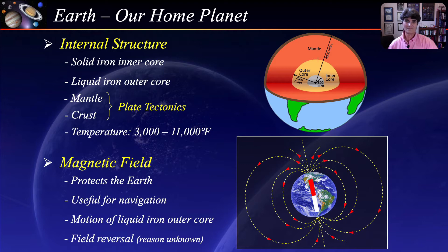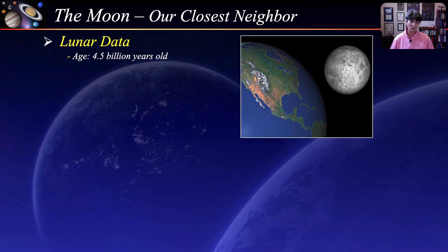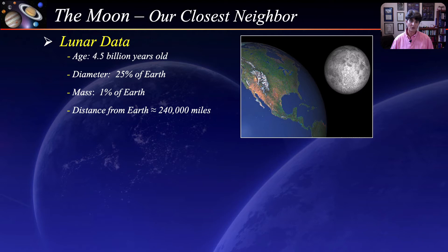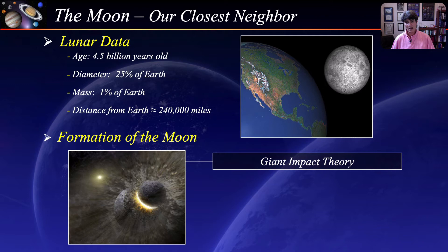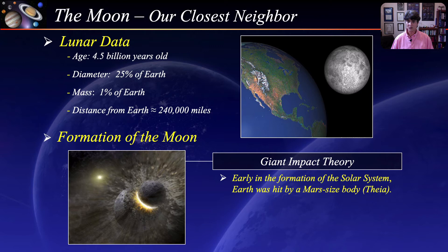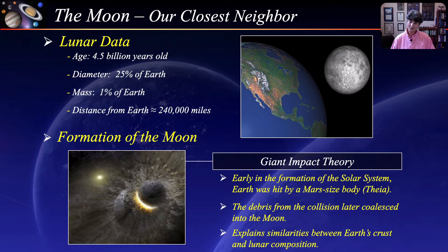Now let's take a brief look at our only natural satellite, the Moon. The Moon is about the same age as the Earth — 4.5 billion years old. Its diameter is about a quarter that of the Earth, although its mass is only 1% of the Earth's, and its distance from Earth is about 240,000 miles. The most dominant theory of Moon formation is the giant impact theory: shortly after the Earth formed, a large body possibly the size of Mars collided with the Earth, melting the surface rocks, and the Moon formed from the ejected molten rock from the impact. This also explains why the composition of the Moon is similar to the Earth's crust, and the collision may also have given Earth its axial tilt.